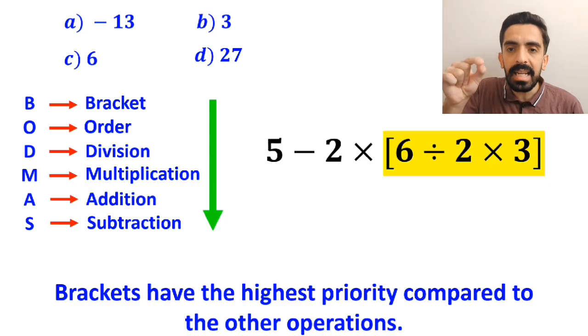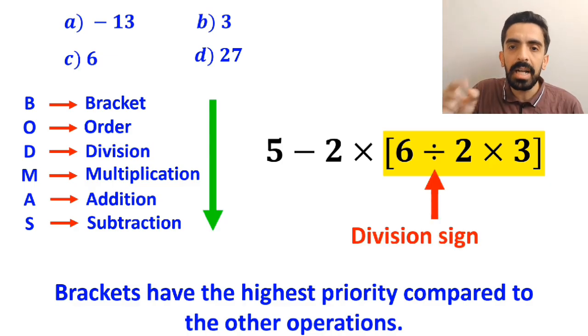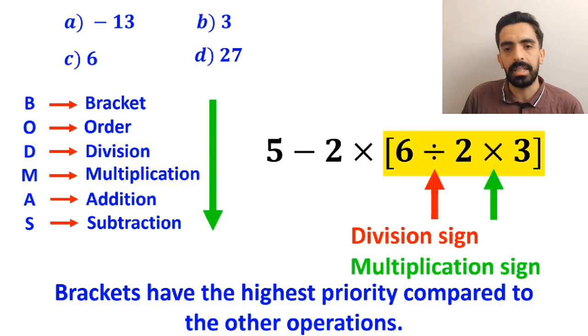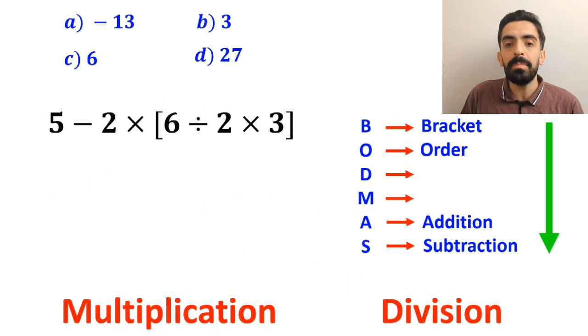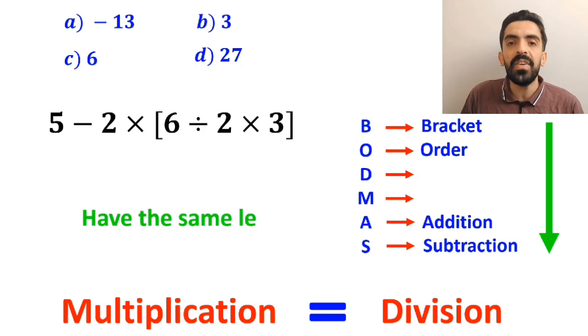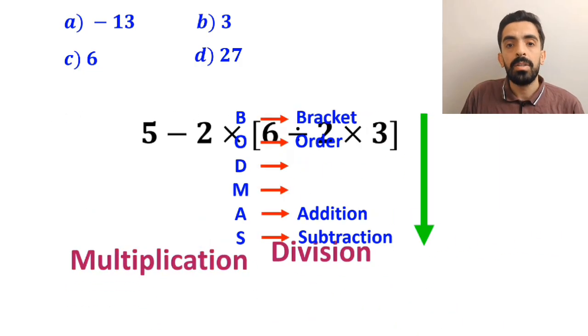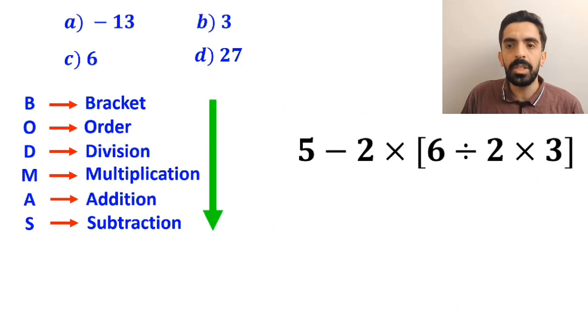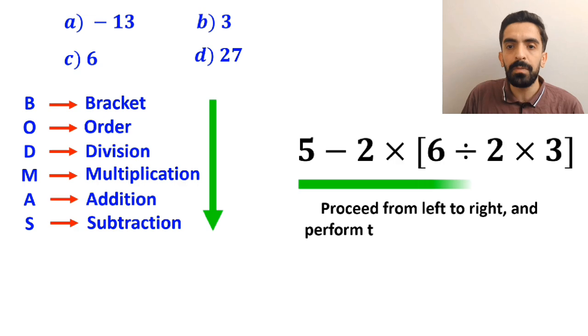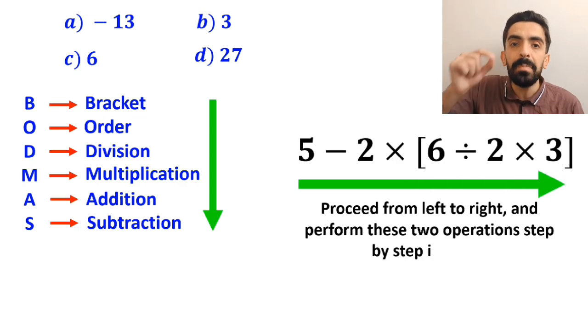As you can see in the image, we have a division sign followed by a multiplication sign. It's very important to keep in mind that according to the BODMAS rule, multiplication and division have the same level of priority. So, the best thing to do here is to proceed from left to right, and perform these two operations step by step in order.